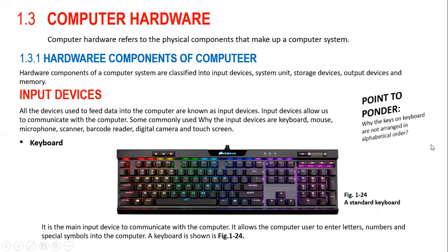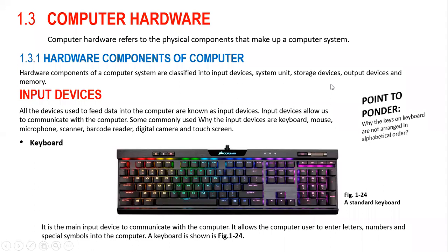These were all the careers in information technology. Now the next topic we are going to cover today is computer hardware. Computer hardware refers to the physical components that make up a computer system — the parts which we can touch. Hardware components of computer systems are classified into input devices, system unit, storage devices, output devices and memory.